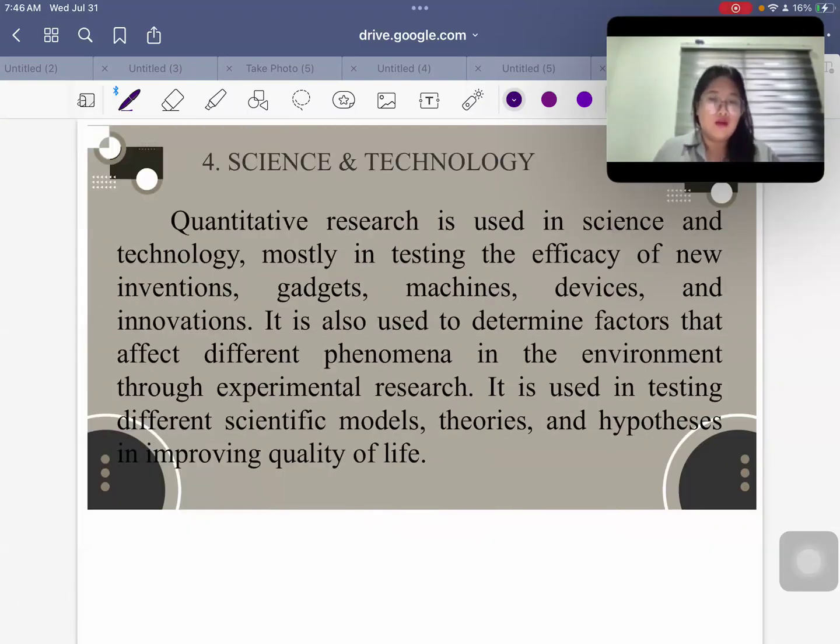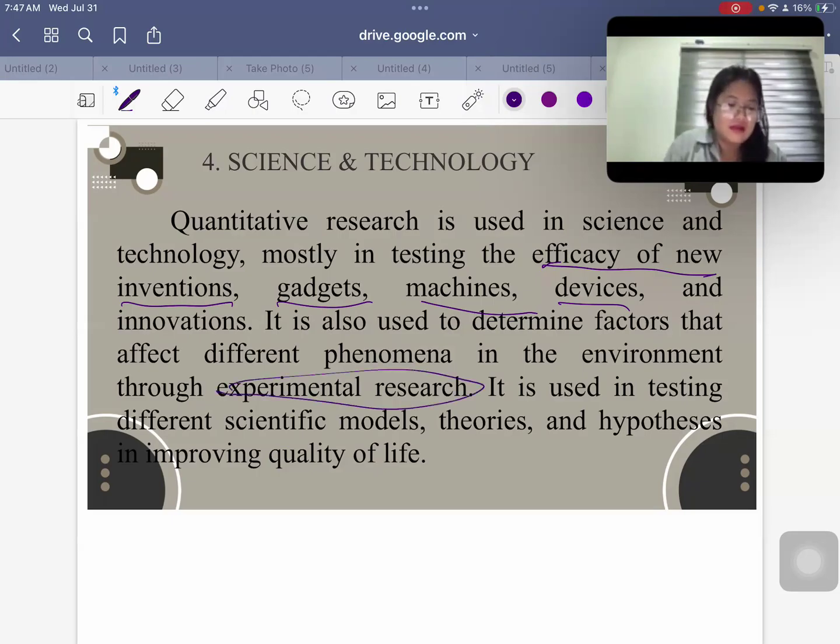We also find it useful in science and technology because quantitative research is used in science and technology, mostly in testing the efficacy of new inventions, gadgets, machines, and devices. So we also look into the factors that will actually affect the different phenomena in environment through experimental research. So experimental research, you might have heard it already. This is having the experimental and the control group. So it is used in testing different scientific models, theories, hypothesis, and improving the quality of life.